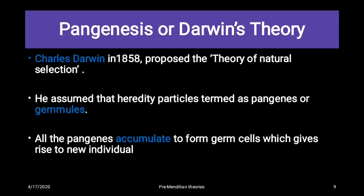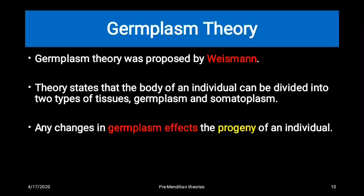Pangenesis, or Darwin's theory, was proposed by Darwin in the year 1858. He is also known for the theory of natural selection. He believed that the particles responsible for carrying genetic material from one generation to another are referred to as pangenes, and that all these pangenes accumulate to form gametes or germ cells, which are responsible for the formation of a new individual.